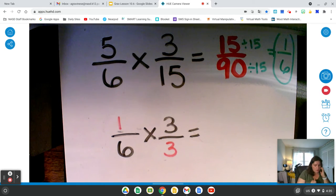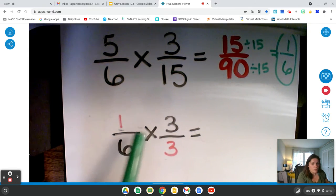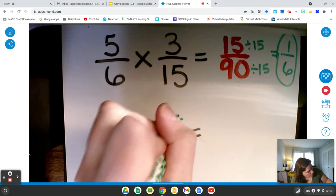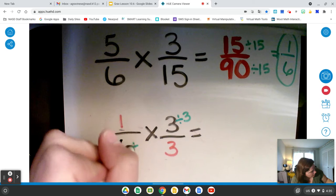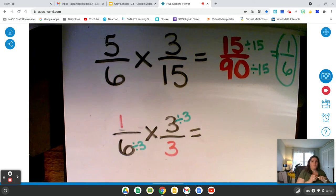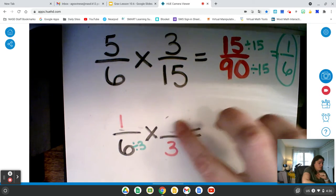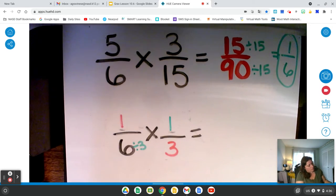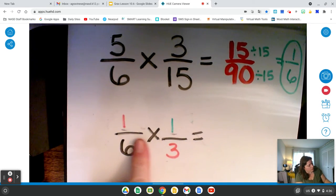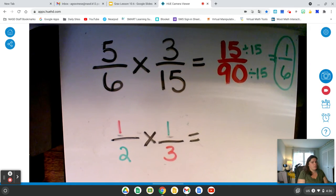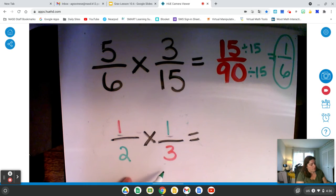All right. Well, that's a lot better. Wait a minute. Can I do anything with my other diagonal? Let's check this diagonal. I have 3 and 6. Well, they're both in my 3 times tables. I can divide them both by 3. 3 divided by 3 equals 1. 6 divided by 3 equals 2. Wow. I made this problem a whole lot simpler. I have 1/2 times 1/3.